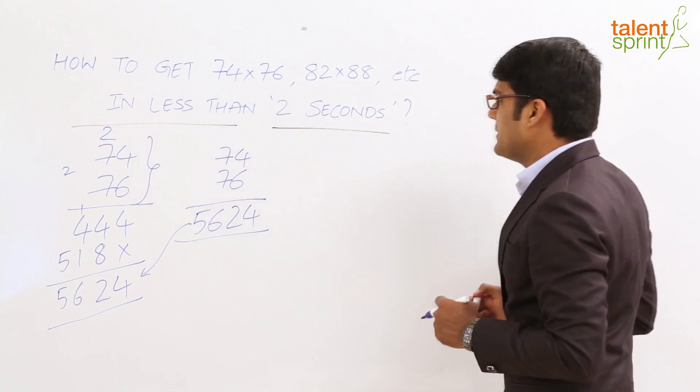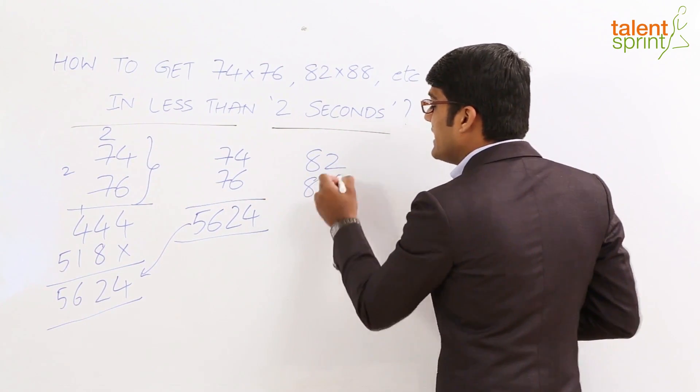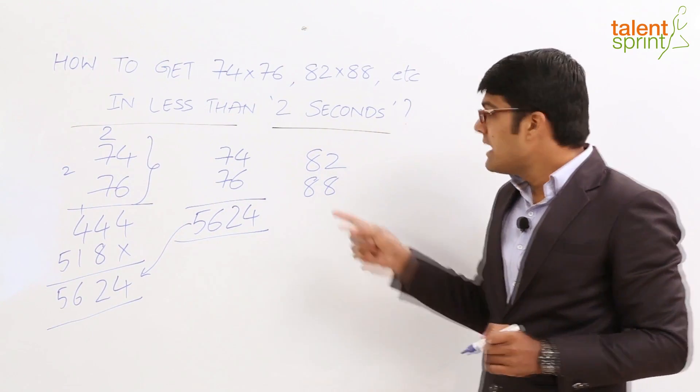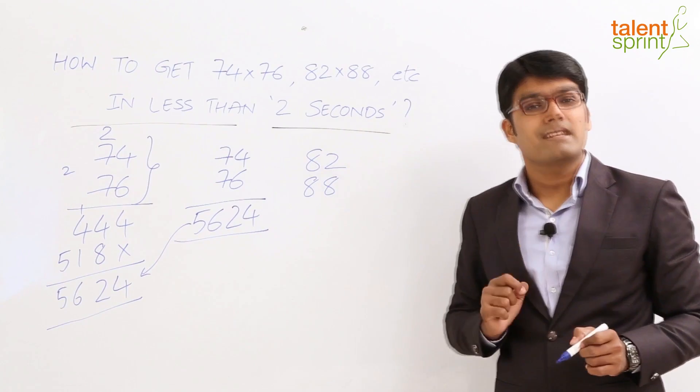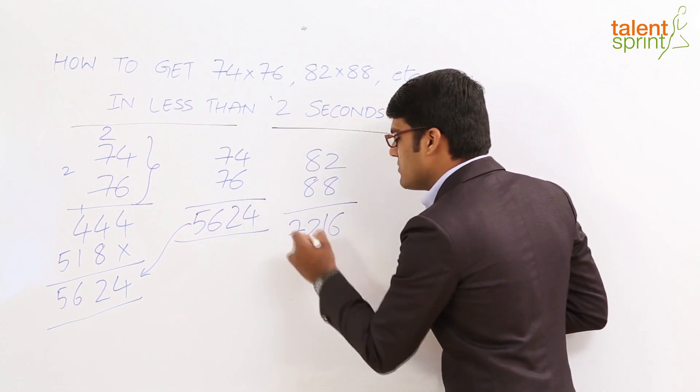Let us consider another example: 82 and 88. Again the numbers are partially complementary, right? 2 and 8 add up to 10 and the tens places are equal. So what do we do? 2 into 8 is 16, 8 into 9 is 72. 7,216 is your answer.